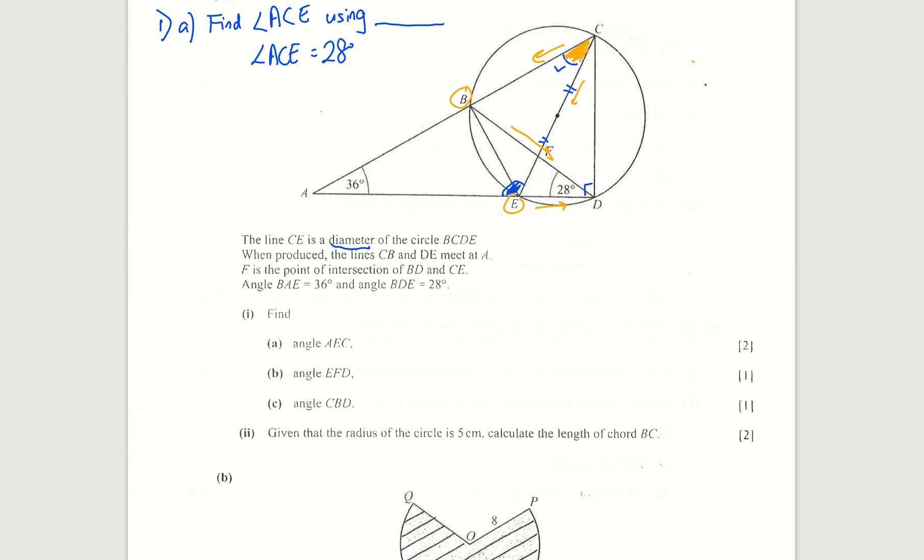All right, so once I find that, then I can find AEC. Sum of angles in the triangle add up to 180, so check that the angle is 116.